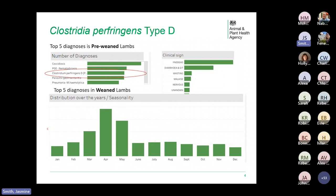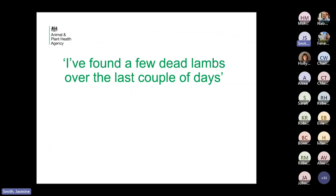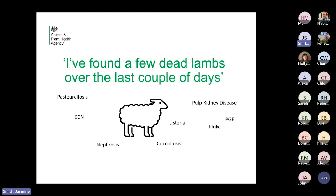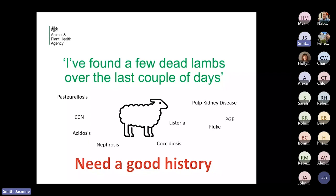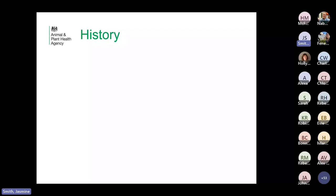A very common scenario is farmers reporting finding a few dead lambs over the last couple of days. Given the extensive nature of sheep farming, they're not necessarily watched all the time, so there might not be much to see. You're left with quite a lot of possibilities initially. The best place to start is with a good history. The first thing to establish is whether this is a sudden death or just found dead, because those don't mean the same thing — with a fleece on, you can't necessarily know if they've been losing condition.